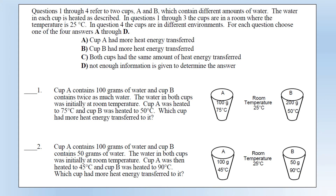We are going to have a look at some questions on heat and temperature to see how well you understand this topic. We've got different scenarios with mass and temperature, and you need to figure out how the heat energy transferred to them relates. For question one: cup A is 100 grams at 75 degrees centigrade, cup B is 200 grams at 50 degrees centigrade - both water, both heated from room temperature of 25 degrees. Which cup had more heat energy transferred to it?